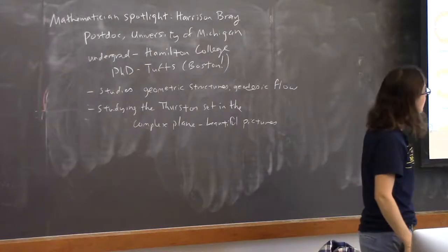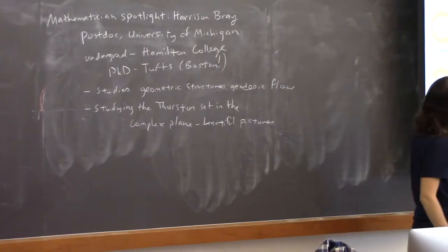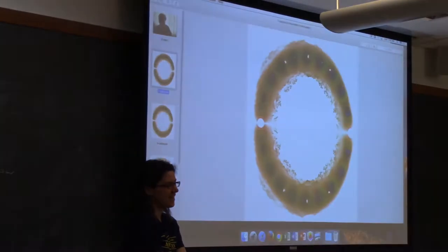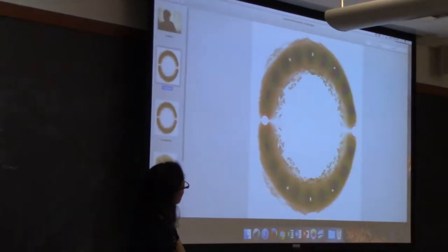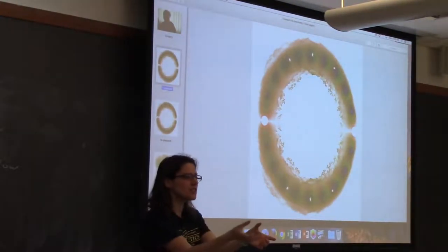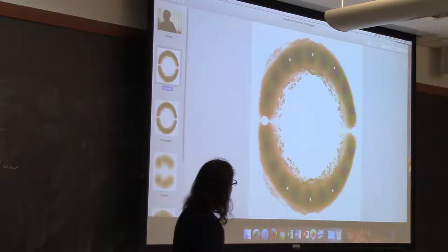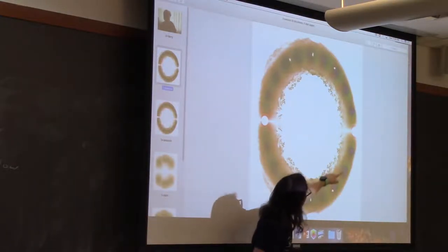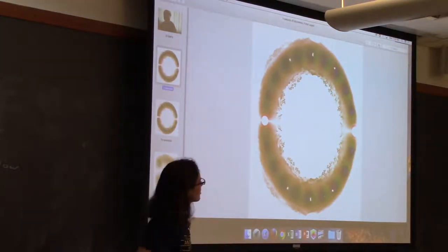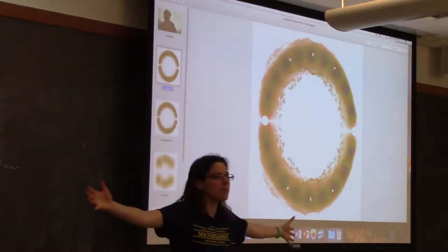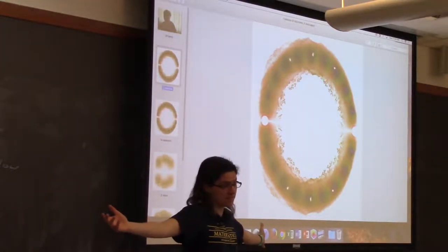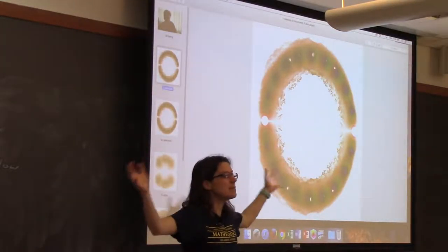So I thought I'd show those to you. This is the Thurston set. Isn't it beautiful? It's kind of a fattened version of the unit circle. The unit circle goes through all these holes, and then it's kind of a fattened version.